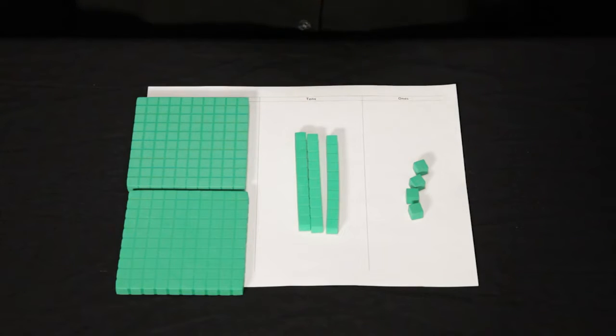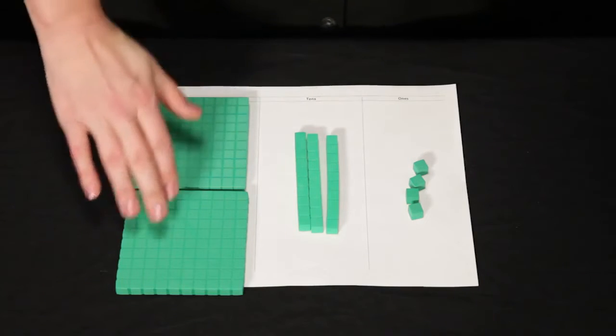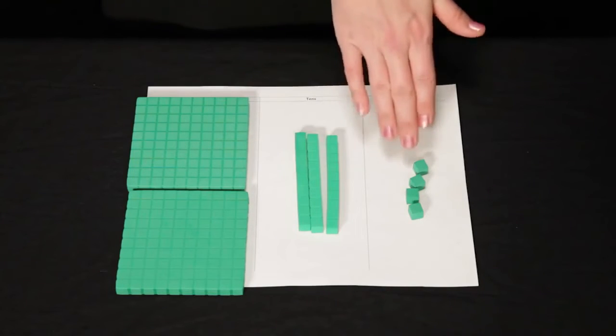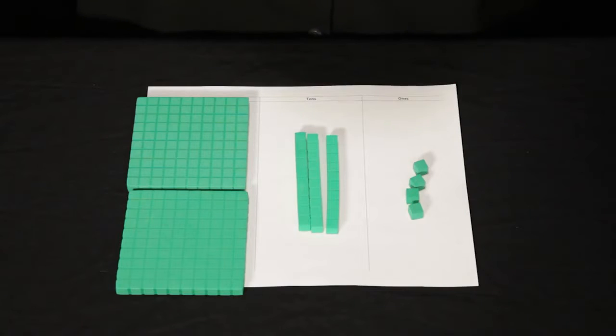We can use base 10 blocks to show the problem 234 minus 88. I've already set up 234. Now I'm going to take away 88.